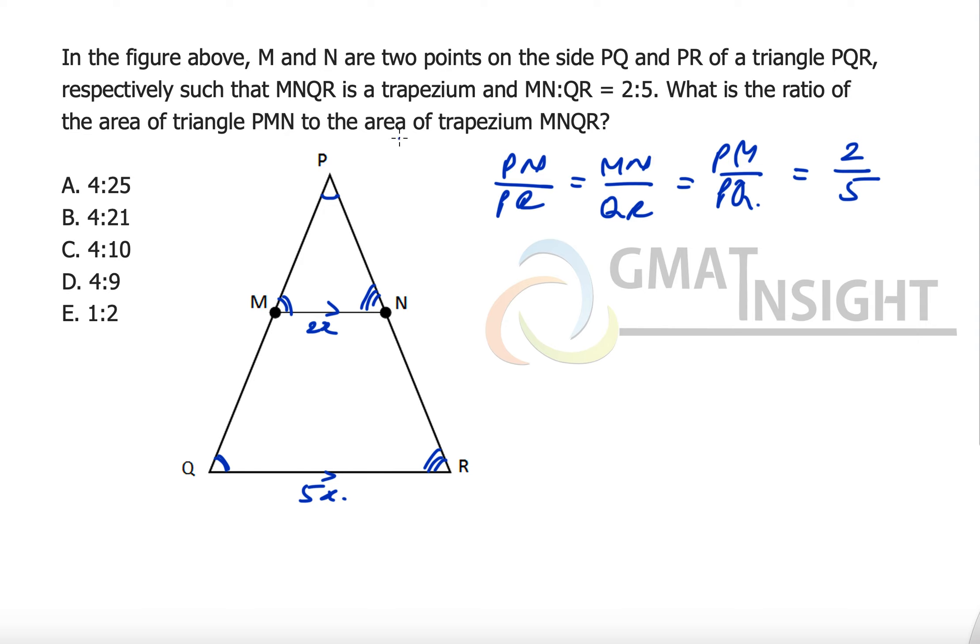What is the ratio of area of triangle PMN to the area of trapezium MNQR? Now ratio of areas of two similar triangles because we know that triangle PMN is similar to triangle PQR.